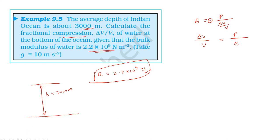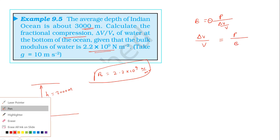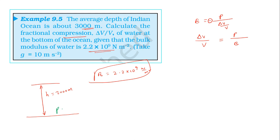To find the pressure at the bottom, the density of water is approximately 1000 kilograms per meter cube.